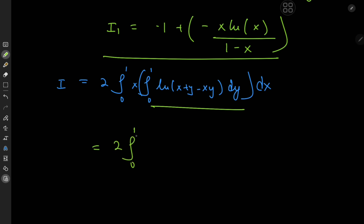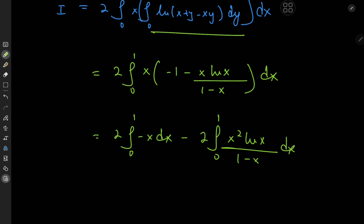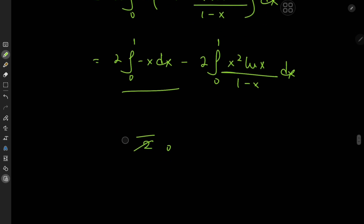So this was I₁ and we know exactly what it evaluates to. That means we have twice the integral from 0 to 1 of x times negative 1 minus x times log x, divided by (1 minus x), dx. We have twice the integral from 0 to 1 of negative x dx, minus twice the integral from 0 to 1 of x squared times log x divided by (1 minus x) dx. The first term gives me negative 2 times x squared over 2 — the 2's cancel — with limits 0 and 1, so that gives me negative 1. So we have negative 1 minus twice the integral from 0 to 1. How exactly do I evaluate this remaining integral?